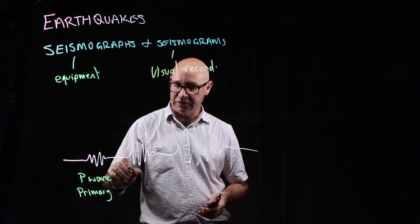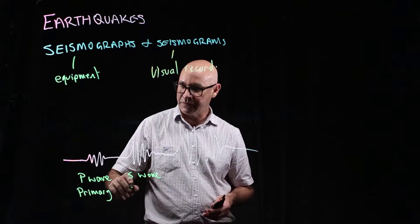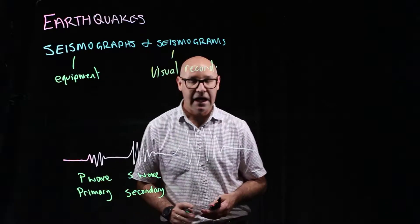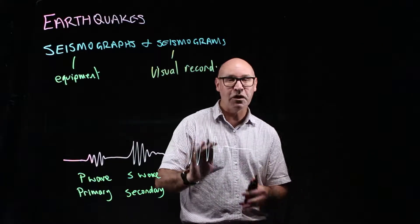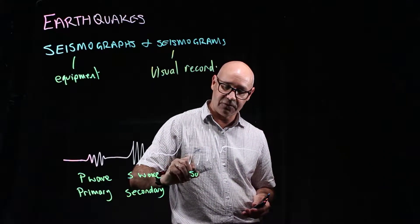The second one is called the S wave. And the S wave, you've probably guessed, is called the secondary wave. And the third one, the most destructive type of wave, is called the surface wave.